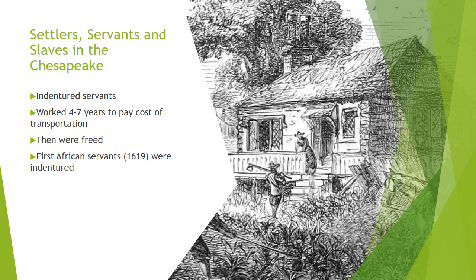After surviving four to seven years of backbreaking labor in the hot sun with mosquitoes everywhere, they would be freed, given freedom dues and a suit of clothing, and could go off to become wage laborers and ultimately purchase land.